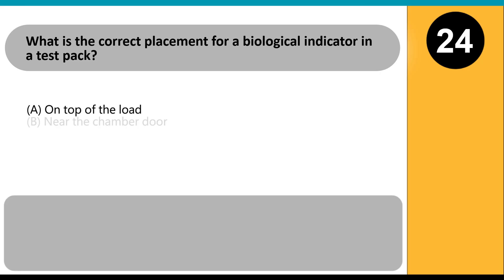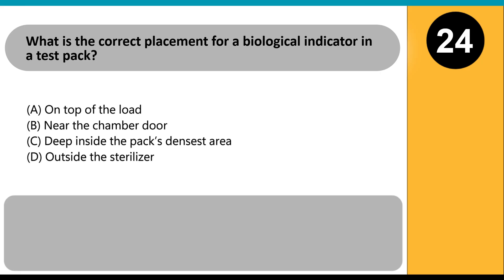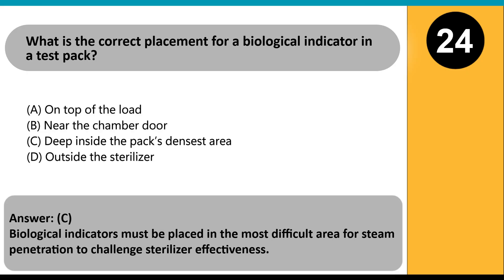What is the correct placement for a biological indicator in a test pack? A. On top of the load. B. Near the chamber door. C. Deep inside the pack's densest area. D. Outside the sterilizer. Answer: C. Biological indicators must be placed in the most difficult area for steam penetration to challenge sterilizer effectiveness.